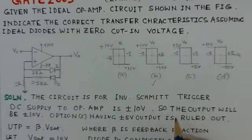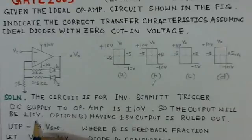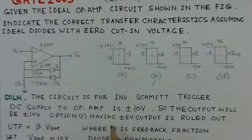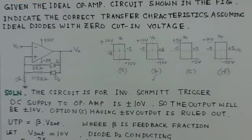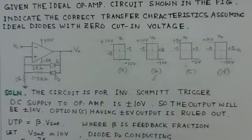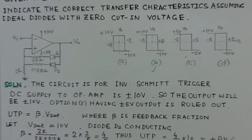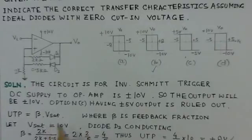Since the DC supply is plus and minus 10 volts, the output should also be plus and minus 10 volts, equal to the V saturation value. Any transfer characteristic option that does not match this saturation level is ruled out. We now proceed to find the UTP and LTP points as asked in the problem.